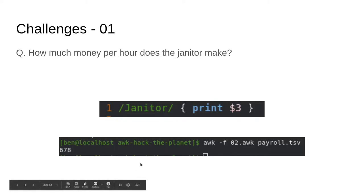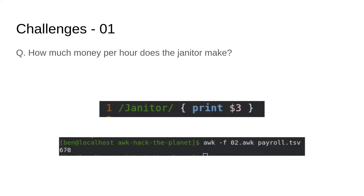So the janitor makes $678 per hour. Now that seems a little high to me, but our janitor is a hero. And if you look at our tabular data, that is the actual correct number. So our janitor is doing fantastic — I would take that job.